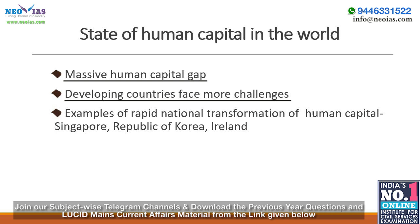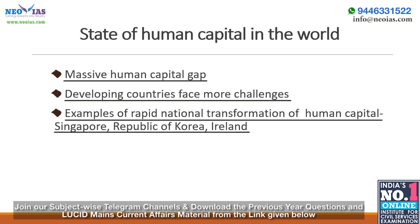This is unacceptable in a world where there are many examples of rapid national transformation of human capital, as seen in Singapore, the Republic of Korea, and Ireland. Note that Republic of Korea is South Korea, and Democratic People's Republic of Korea is North Korea. There are also cases of specific successes in some of the poorest countries — for example, Malawi, a country in East Africa, has made very fast progress on reducing stunting.